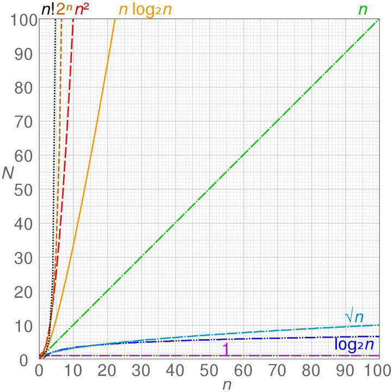An algorithm is said to be exponential time if T(n) is upper bounded by 2^(poly(n)), where poly is some polynomial in n. More formally, an algorithm is exponential time if T(n) is bounded by O(2^(n^k)) for some constant k. Problems which admit exponential time algorithms on a deterministic Turing machine form the complexity class known as EXP. Sometimes, exponential time is used to refer to algorithms that have T(n) = 2^(O(n)), where the exponent is at most a linear function of n. This gives rise to the complexity class E.